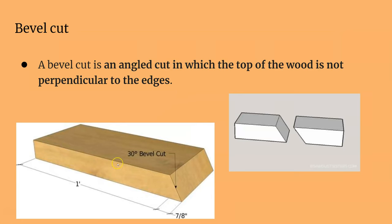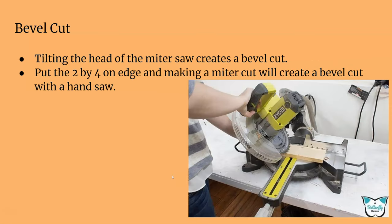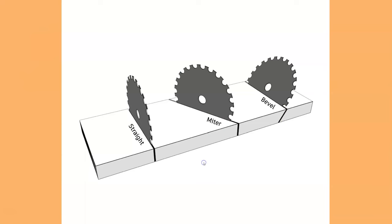A bevel cut is when you're cross cutting but the blade is tilted, so you're actually making an angle on the edge of the board. The miter cut is on the flat; the bevel is on the edge. You tilt the miter saw or your saw to make that cut. So you have a straight cut, a miter cut angled on the flat, and a bevel cut angled on the edge.